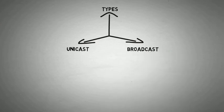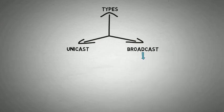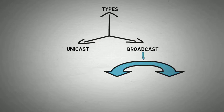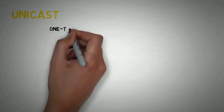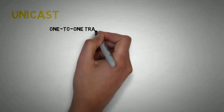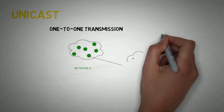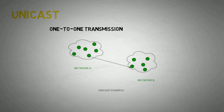Let's see about unicast first. The unicast is called as one-to-one transmission. It means only one IP sends the data to another IP of another network.